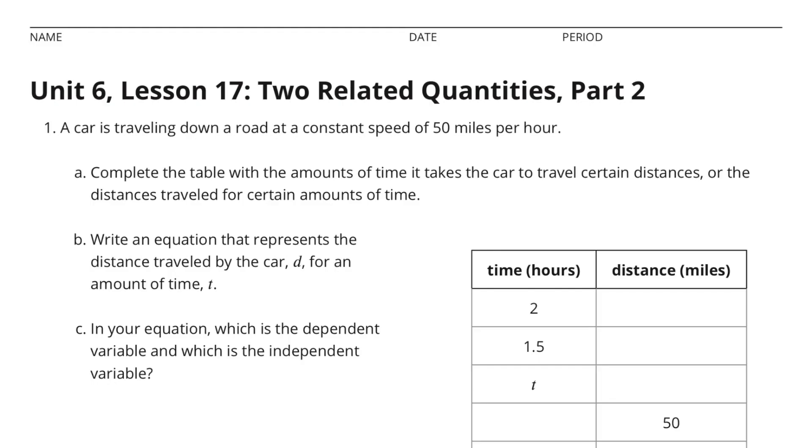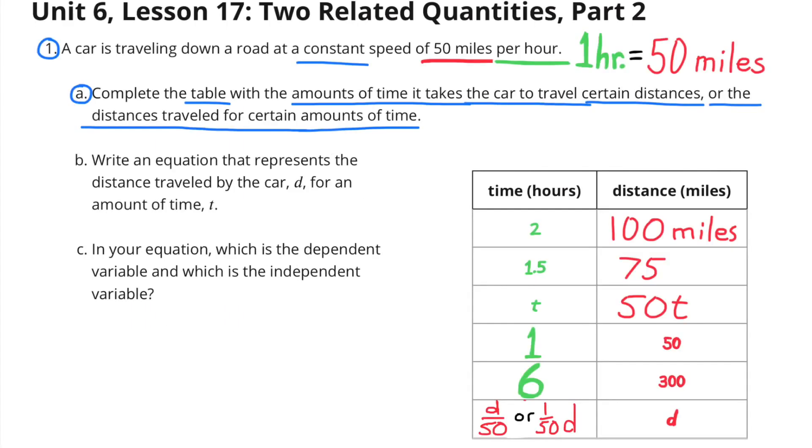Unit 6 Lesson 17 Two Related Quantities Part 2. Number 1. A car is traveling down a road at a constant speed of 50 miles per hour, so 1 hour equals 50 miles.